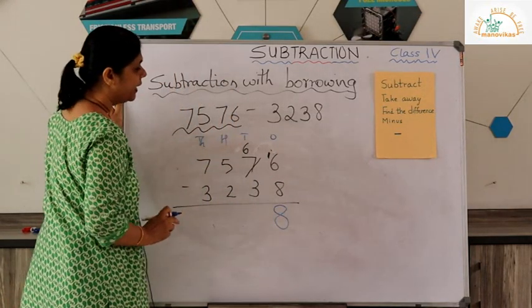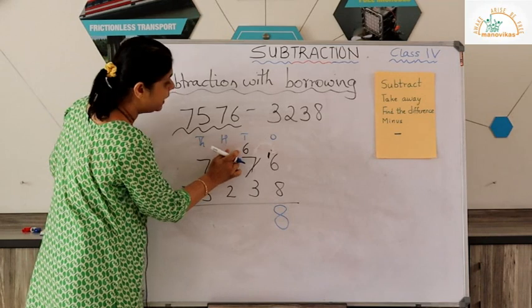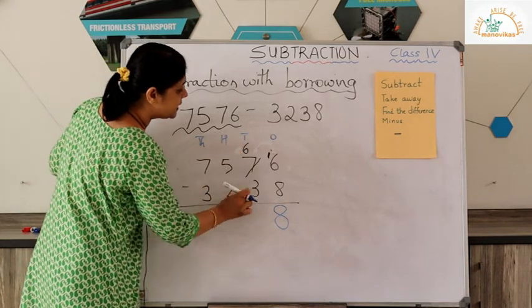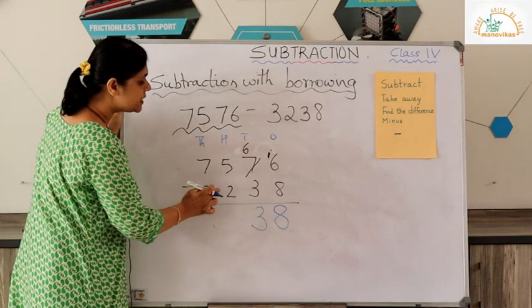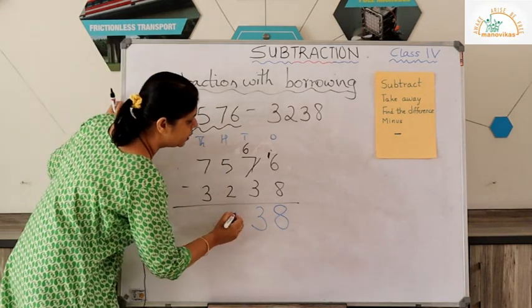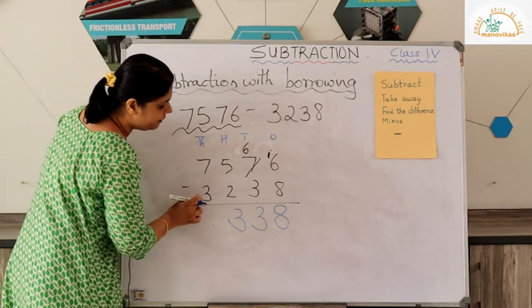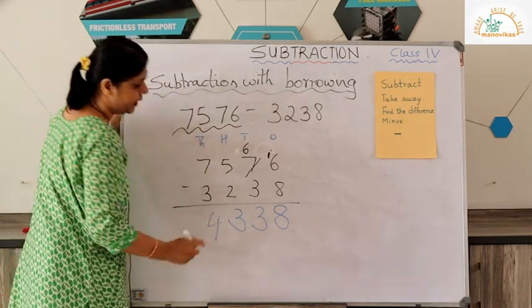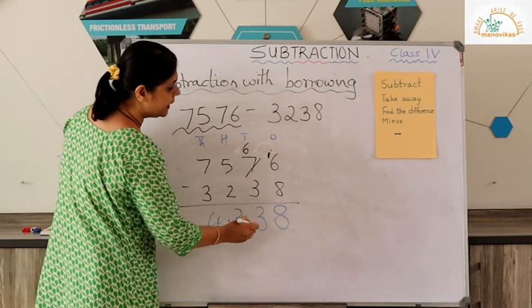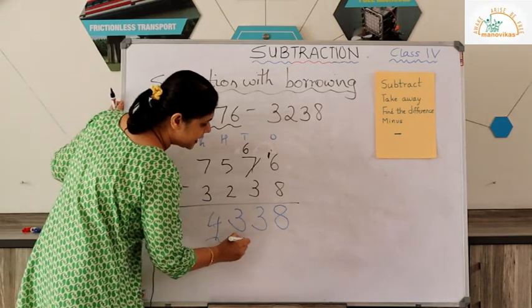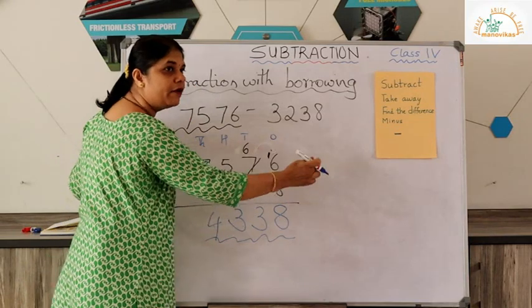The ones digit is now sixteen, and the tens digit is now six. Sixteen minus eight is eight. Six minus three is three. Five minus two is three. Seven minus three is four. The answer is 4338.